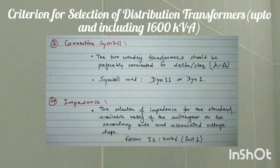Fourth, impedance. The selection of impedance is based on the standard available rating of the switchgear on the secondary side and associated voltage drops. More information for this is given in IS Standard 2026 Part 1.